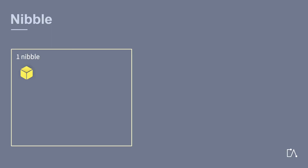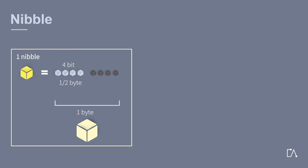A nibble is a specific amount of data. This amount of data consists of a 4 bit data value. 4 bits are also half a byte, because a byte consists of 8 bits. That is why a nibble is also called a half byte.